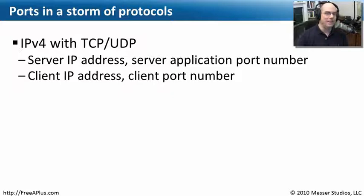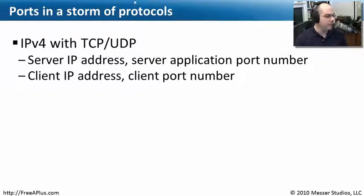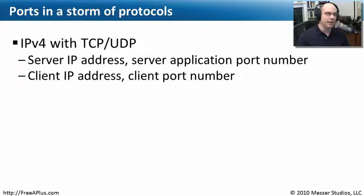Whenever we send information into that window, that computer knows that it's for a particular service — for example, the web server running on that computer. It then communicates back to us with our client IP address and a specific port number, usually one that we pick at random or sequentially. The numbers on our client machines don't matter as much as the numbers on our servers. When we learn these common port numbers today, we're talking about the common port numbers used on these servers.